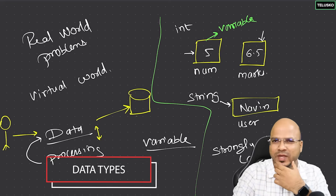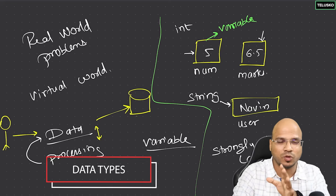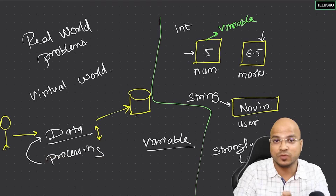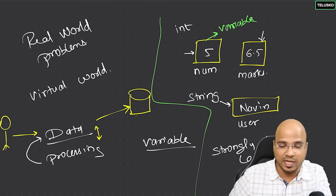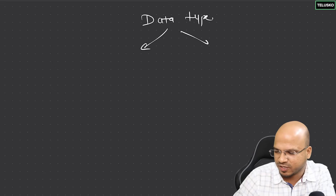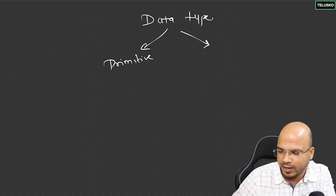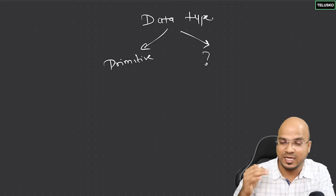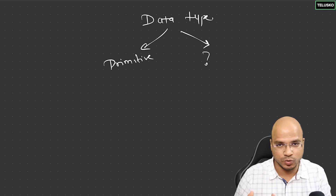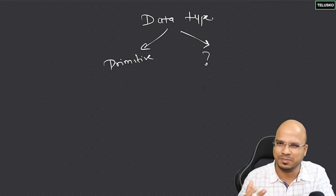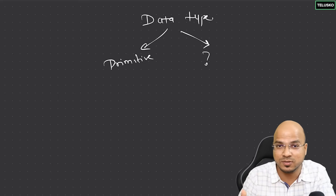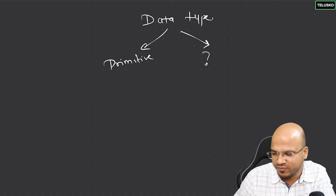Now we know what variables are and how to create them. In the last video we talked about how to create a variable with a data type and a value. Now what are the other options? We have worked with int — do we have other options? We have multiple data types to store data. There are two categories: one is called primitive and the other we'll keep as a question mark for now. Primitive simply means it is simple and basic to work with. We normally work with numbers, point values, characters, and boolean values.